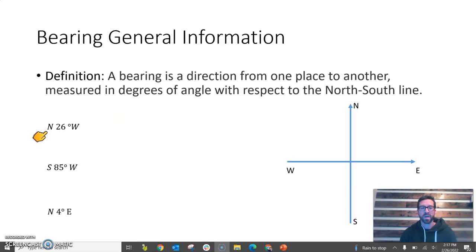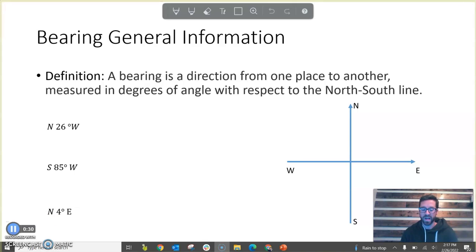A bearing, a direction given as a bearing, will look in this form like north 26 degrees west or south 85 degrees west or north 4 degrees east. And so let's model and see what those look like on kind of a north-south-east-west plane. If I said north 26 degrees west, that means we're going 26 degrees west off of the north-south line. So for that very first one, that would be if this were a 26 degree angle.